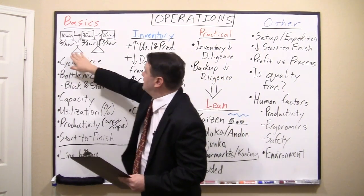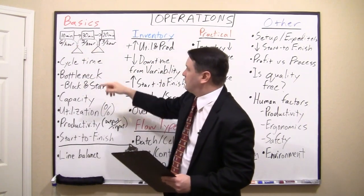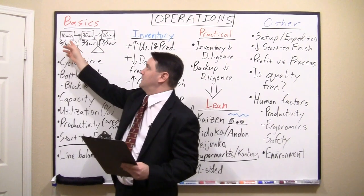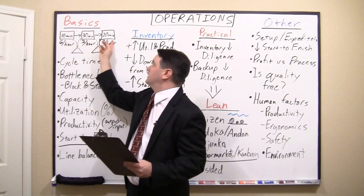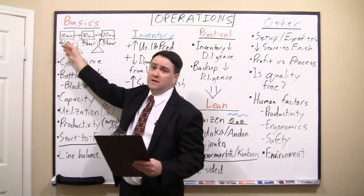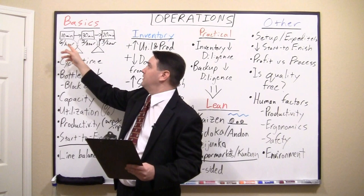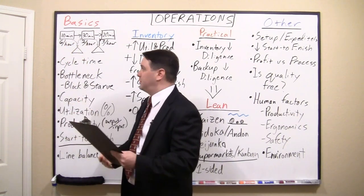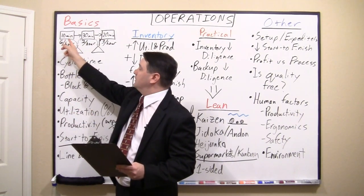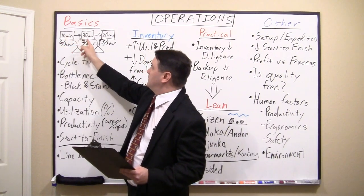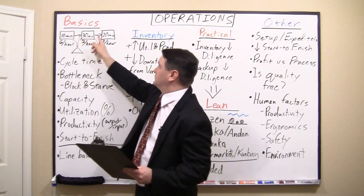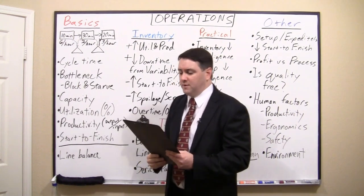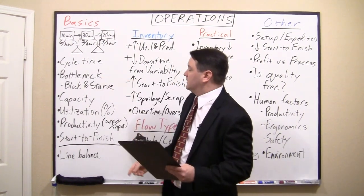Let's talk about this in terms of production. Those triangles represent inventory — we'll get into that in a moment. The first thing I want to talk about is cycle time, which is how long it takes to perform a certain operation. These can be people or machinery or a combination of both — a workstation with both people and machinery. The first one I have here is 10 minutes, the second one is 30 minutes, and the last one is 20 minutes. Those arrows show the process flow.